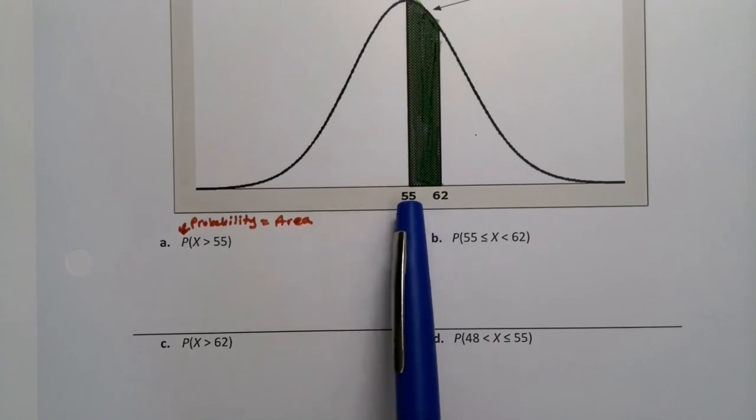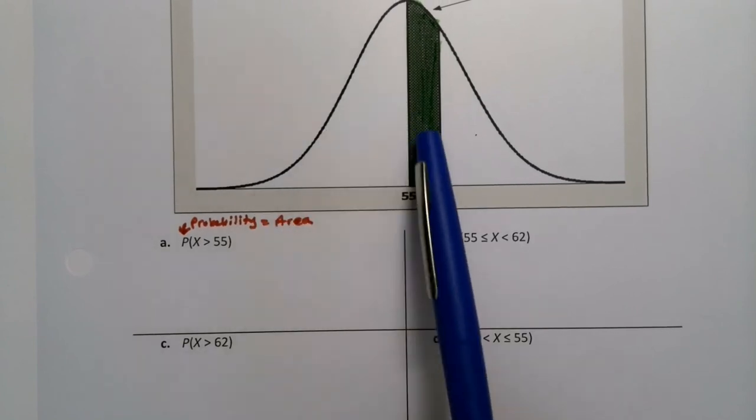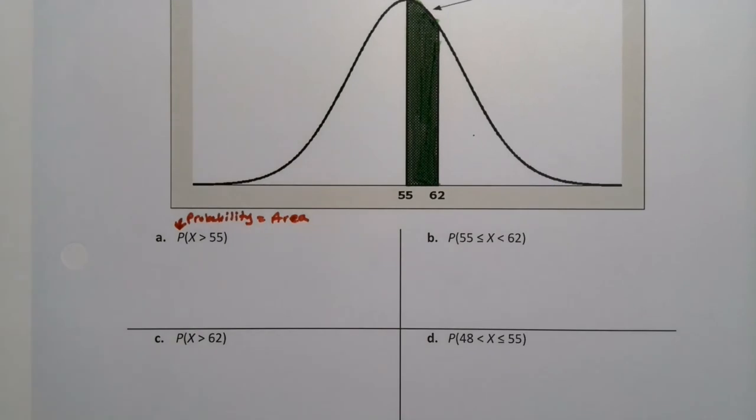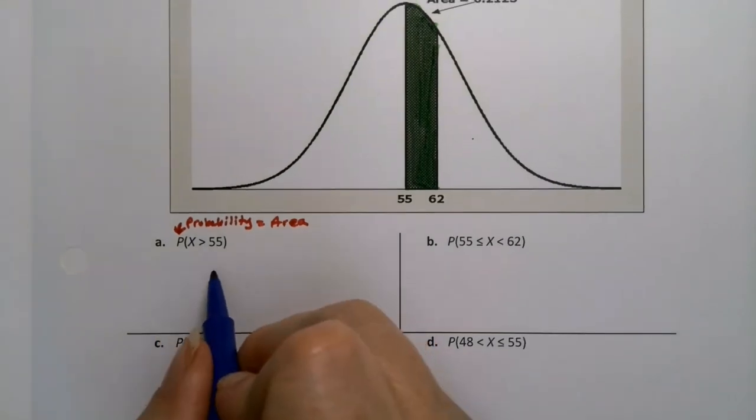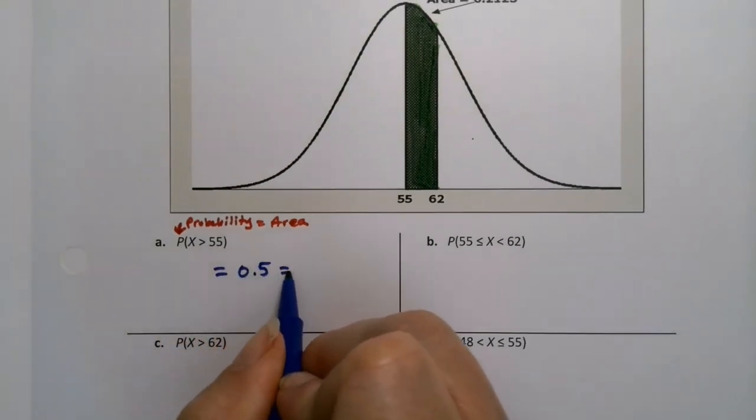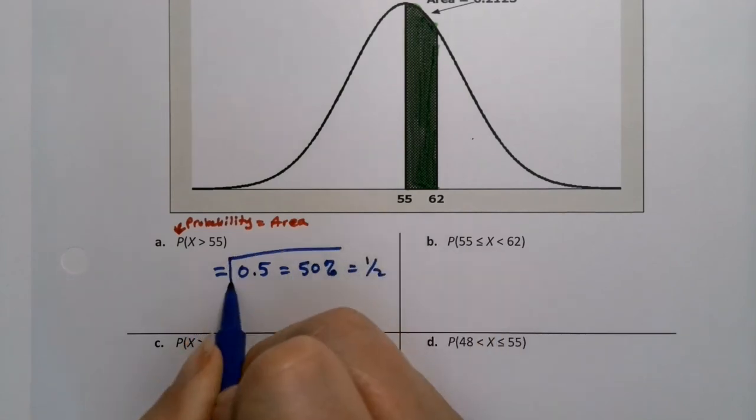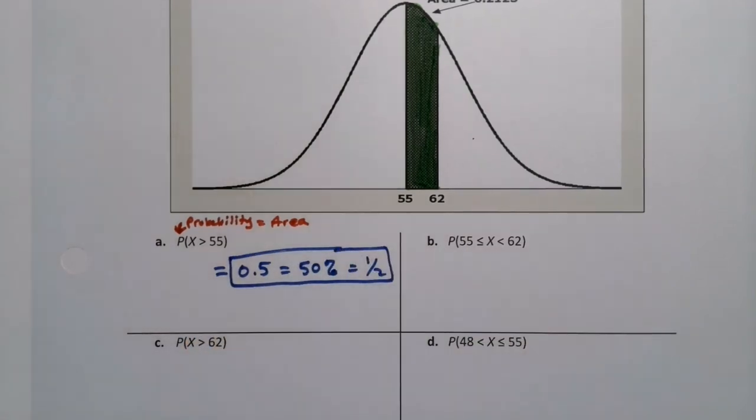So this first question is saying, what's the probability that X is greater than 55? Well, we already answered that. That's in the table, right? 55 is in the center. The whole curve makes 1, so that has to be a half, 0.5, based on just logic. So this is 0.5 or 50% or one half.